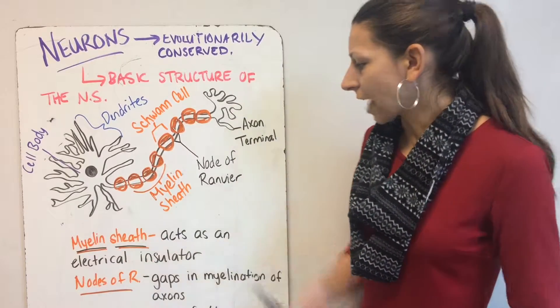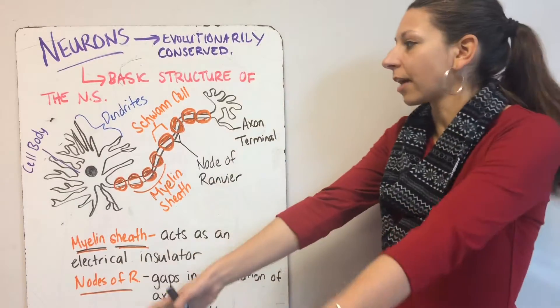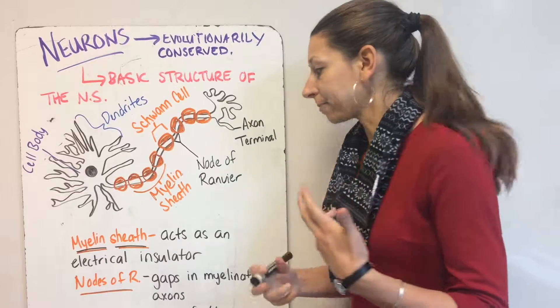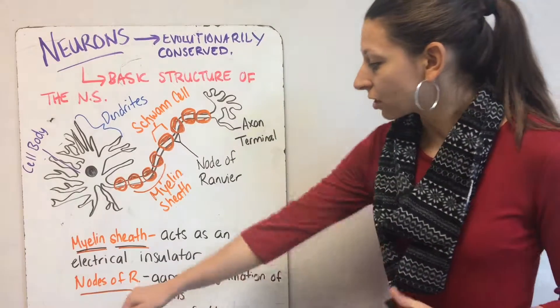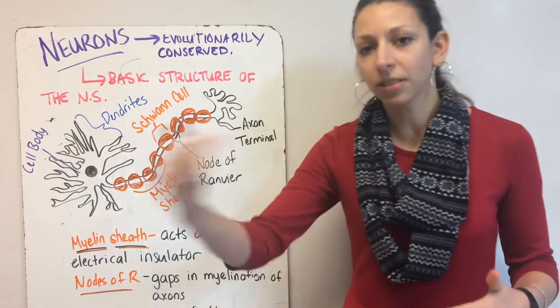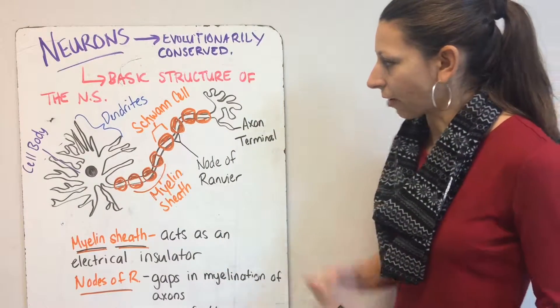Our myelin sheath acts as an electrical insulator. We're sending signals down the cell, so we need to make sure that it can send a signal. The nodes of Ranvier are gaps in the myelination of the axons where the signal is sent through down the cell.